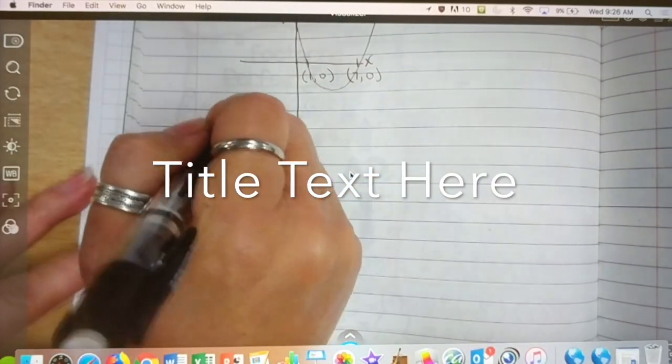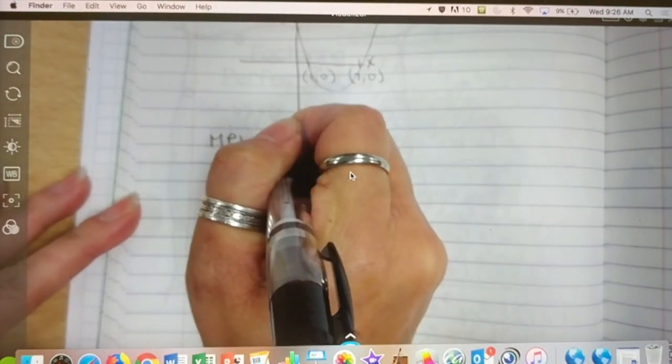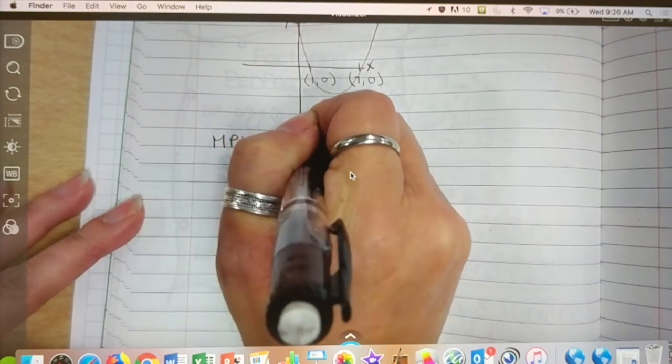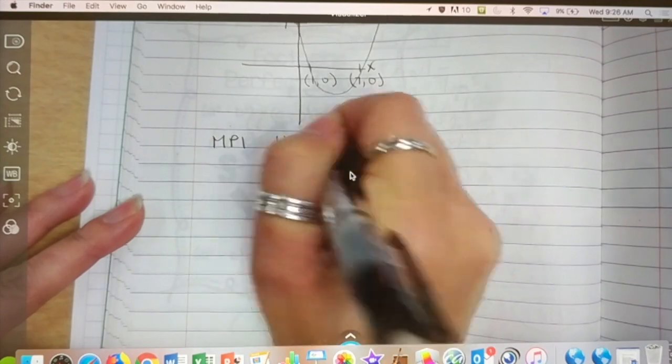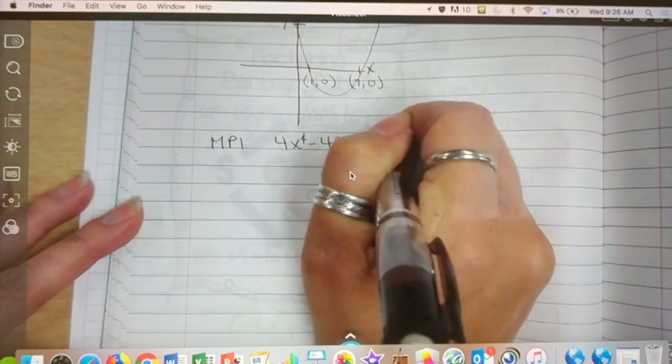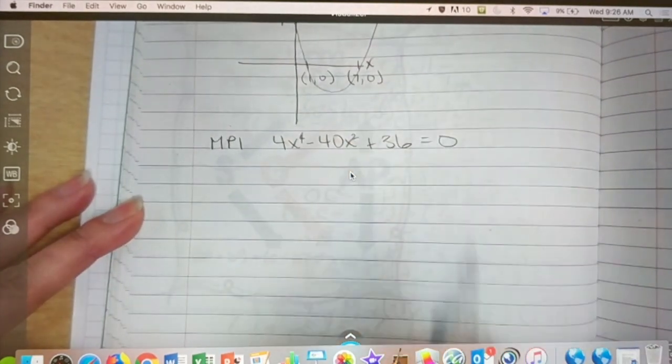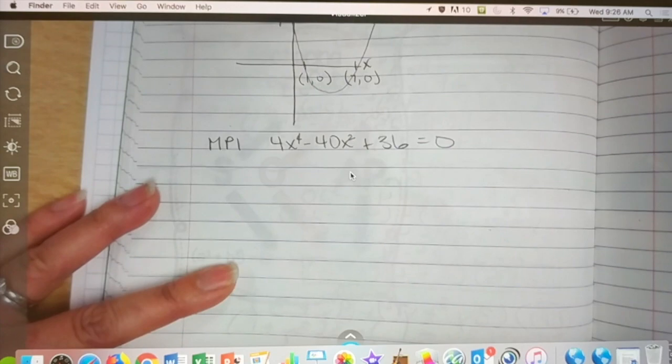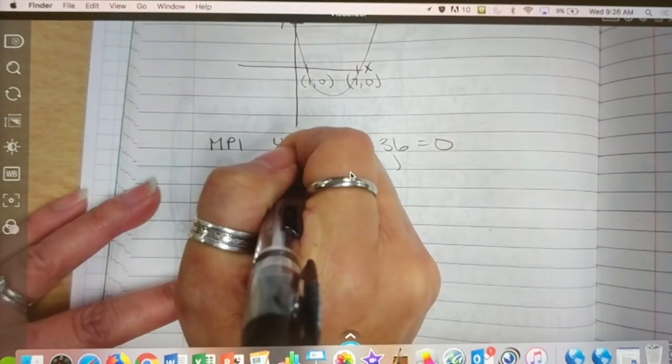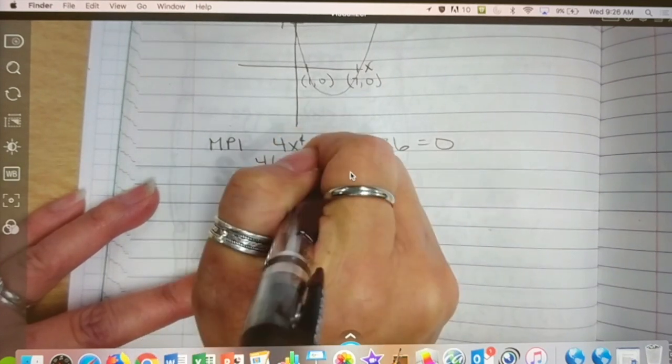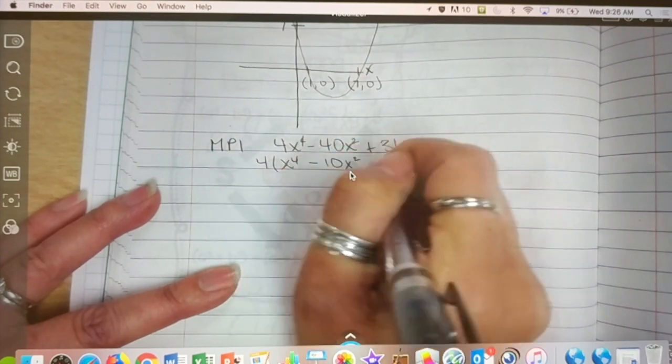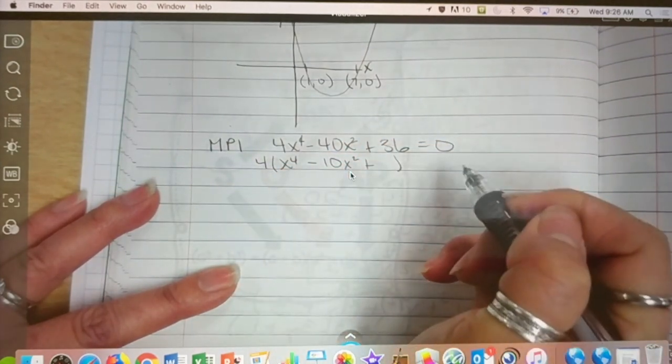Okay, we're going to do monitoring progress one. It's on page 191 in your book. 4x to the fourth minus 40x squared plus 36 equals zero. Okay, first step. Greatest common factor. What is it? 4. Okay, what's left? X to the fourth.